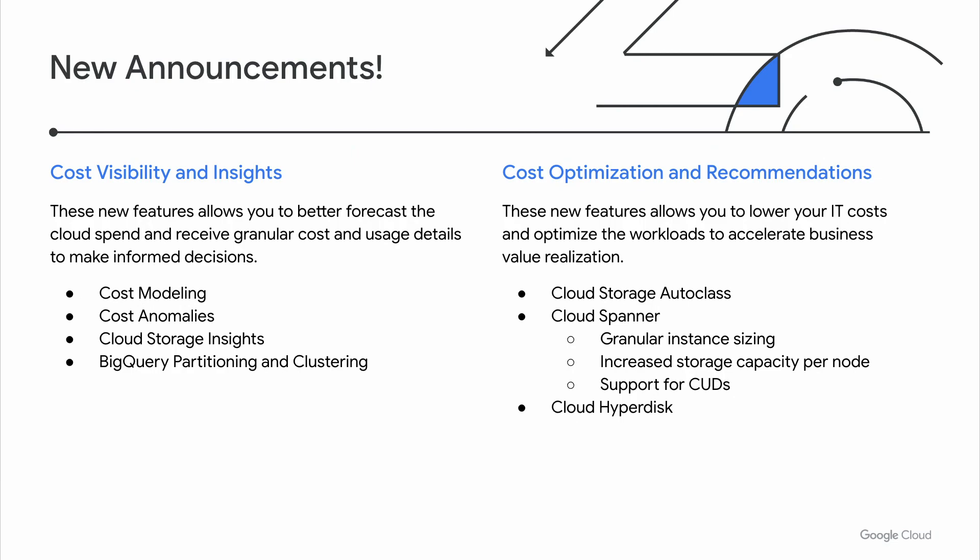Talking about more ways to save costs, let me share some products that we are releasing and announcing at this Next. Starting with products under the category of cost visibility and insights: we are introducing a new cost modeling service to help customers model out and forecast their costs for upcoming workloads before deploying to the cloud. We're also enhancing our cost anomaly detection capabilities to provide proactive monitoring and governance to inform customers about any out-of-the-ordinary spending. We're also introducing a new Google Cloud Storage Insights service that allows customers to monitor the object age and size trends to forecast and control costs. And finally, using the BigQuery Partitioning and Clustering Recommender, customers can save workload execution costs by applying physical design optimization recommendations to their tables.